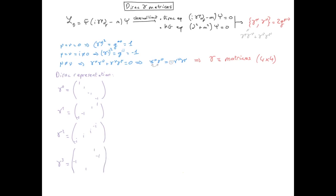With this representation, you can easily verify that gamma naught squared is equal to one, gamma i squared is equal to minus one, and when mu and nu are different, the anticommutator is zero.